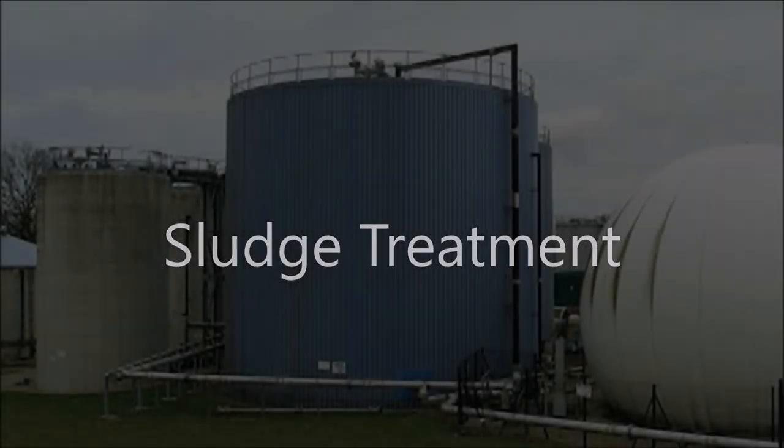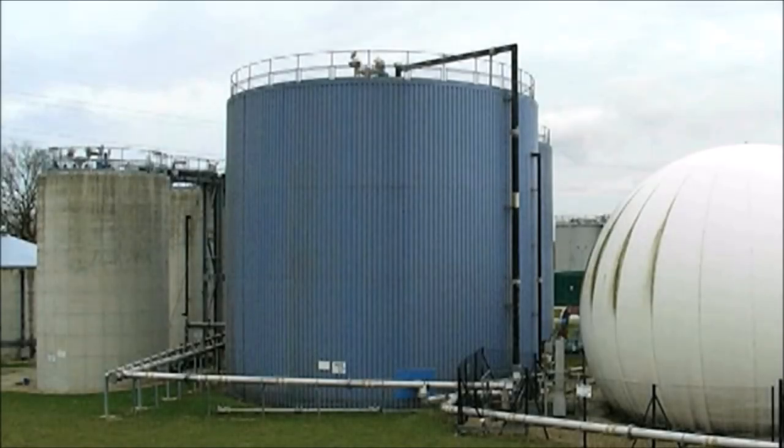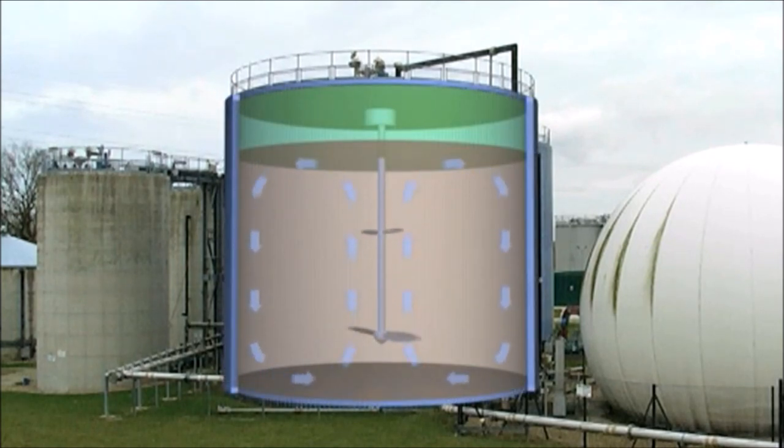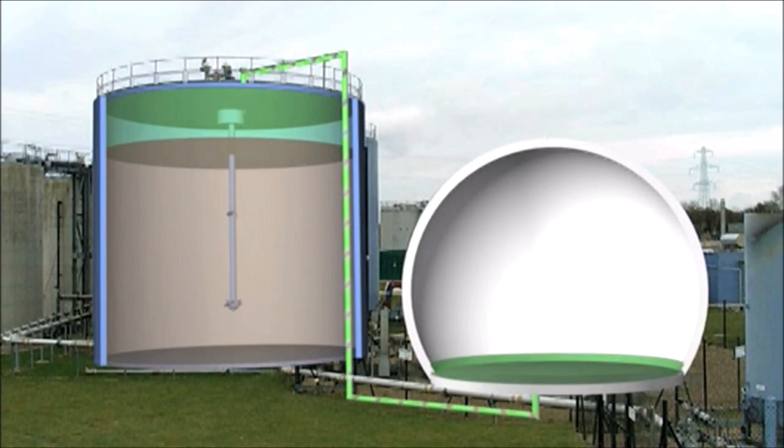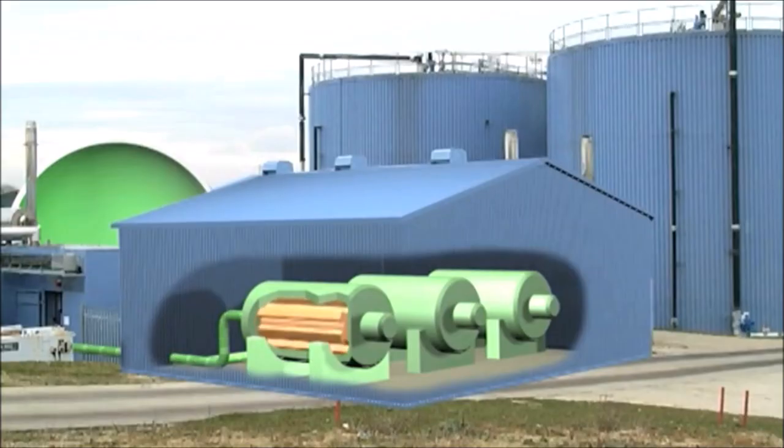The sludge from the settlement stages is pumped into the digester tanks. The temperature in the tanks is kept at around 35 degrees Celsius. The bacteria, which have no oxygen, slowly break down the sludge. This process produces methane gas, which can be drawn off and stored in this gas balloon, before being used to generate electricity in a combined heat and power plant.